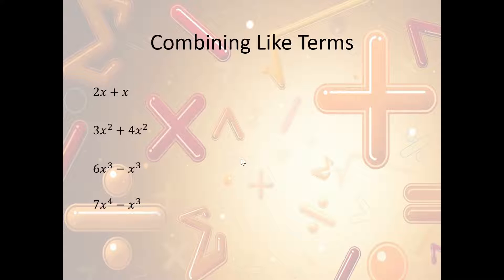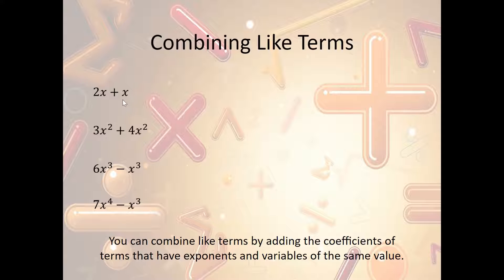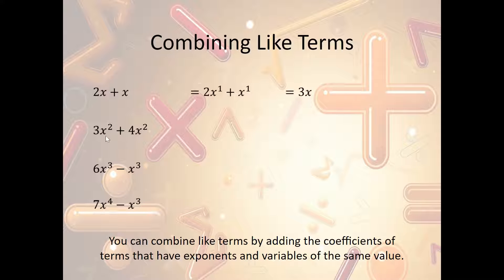Now, combining like terms. In order to combine like terms, they have to have the same exponents and same variables. If they do, we add the coefficients. So for instance, we have 2x and x — they're both x's with an implied exponent of 1, so 2x plus x is 3x. We have 3x² plus 4x² — same variable, powers match, so we add the coefficients: 3 plus 4 is 7x².